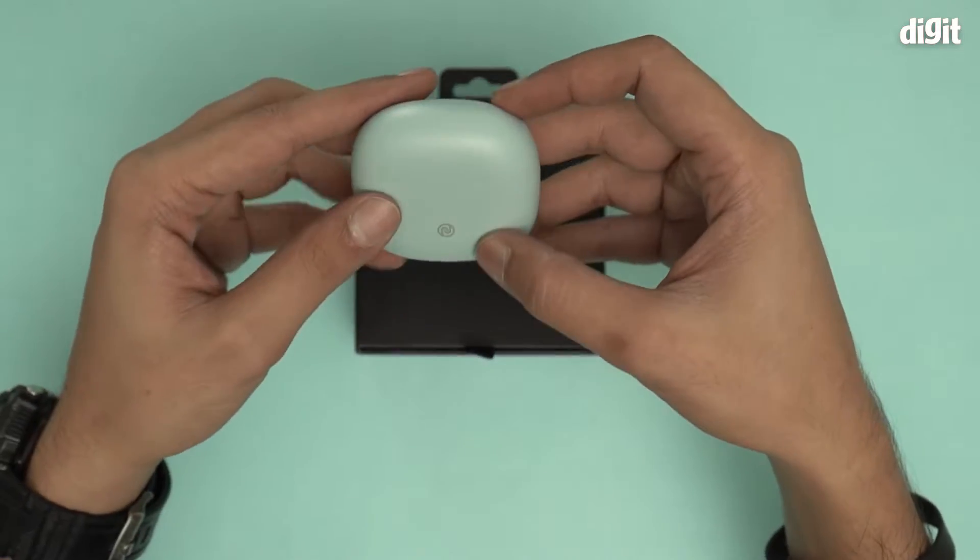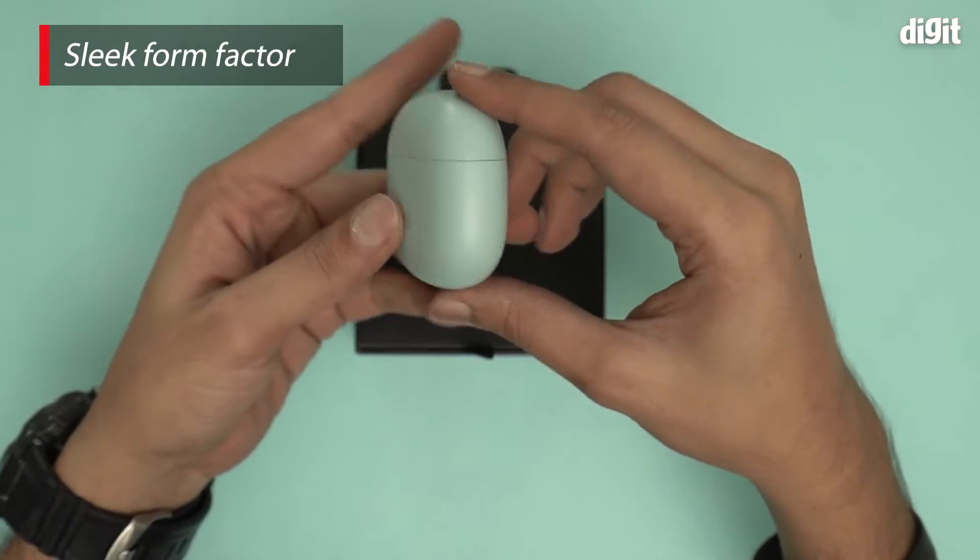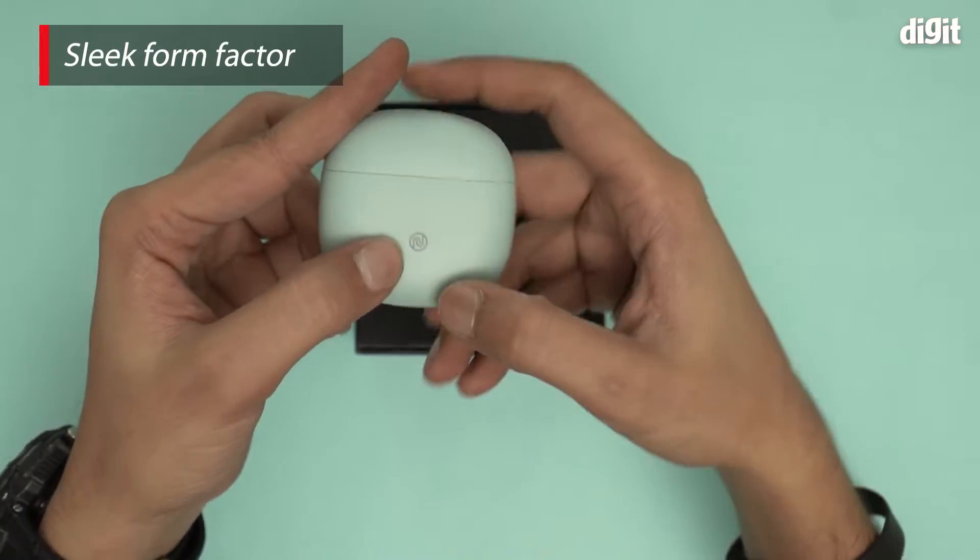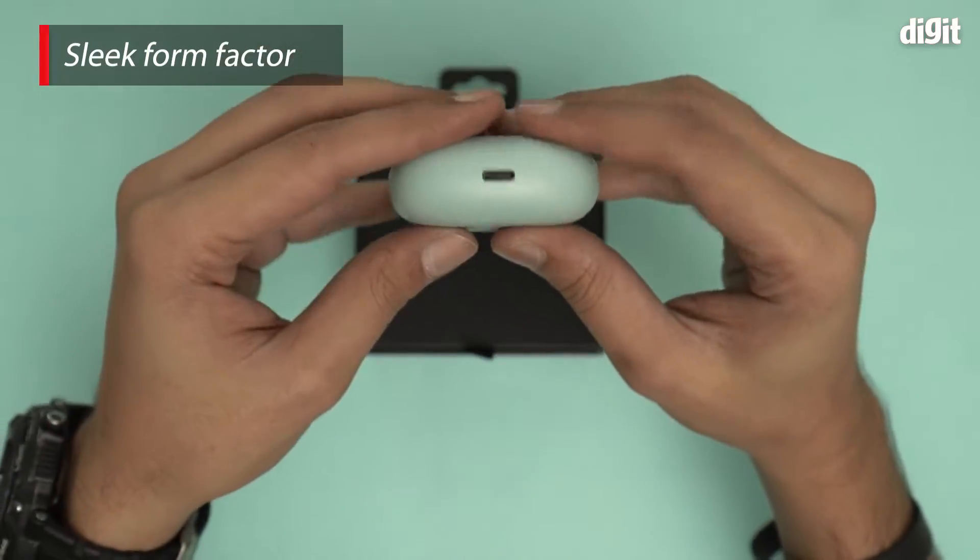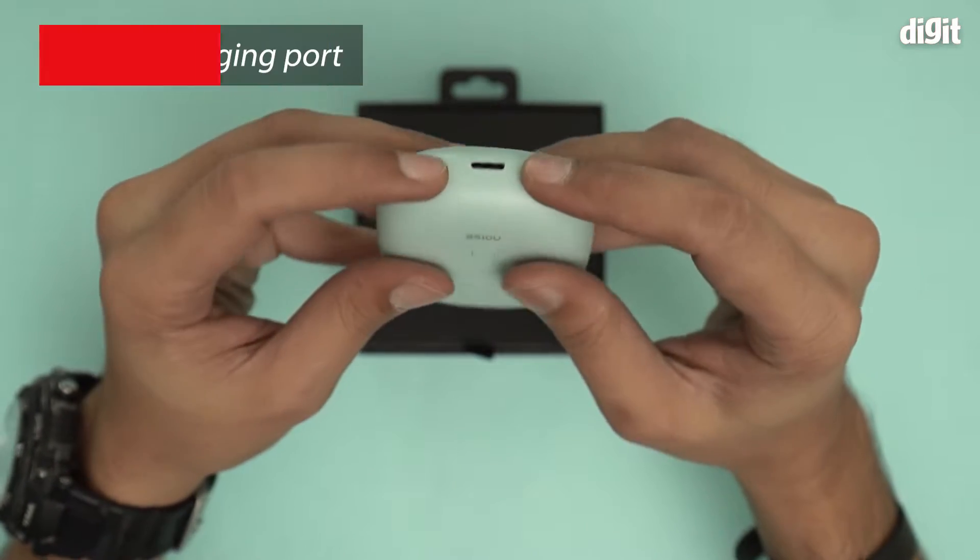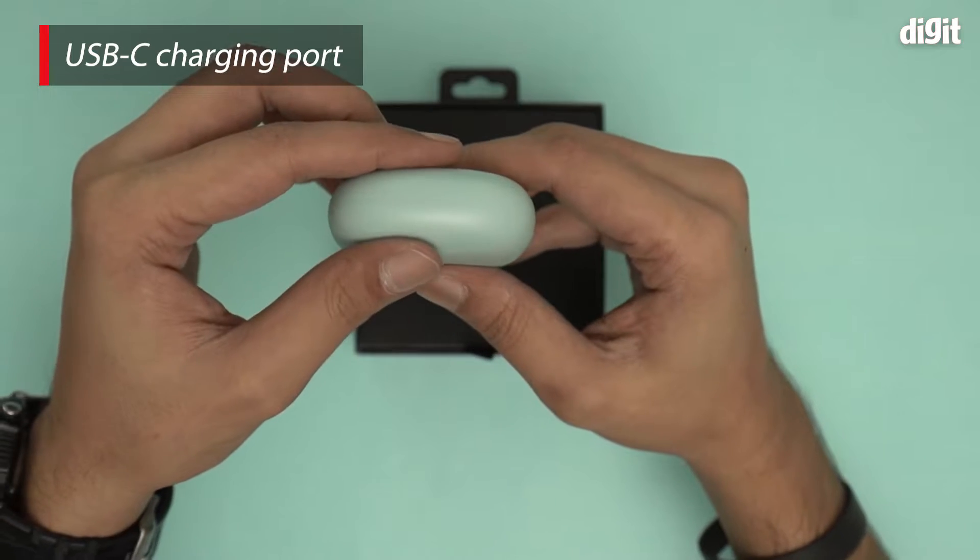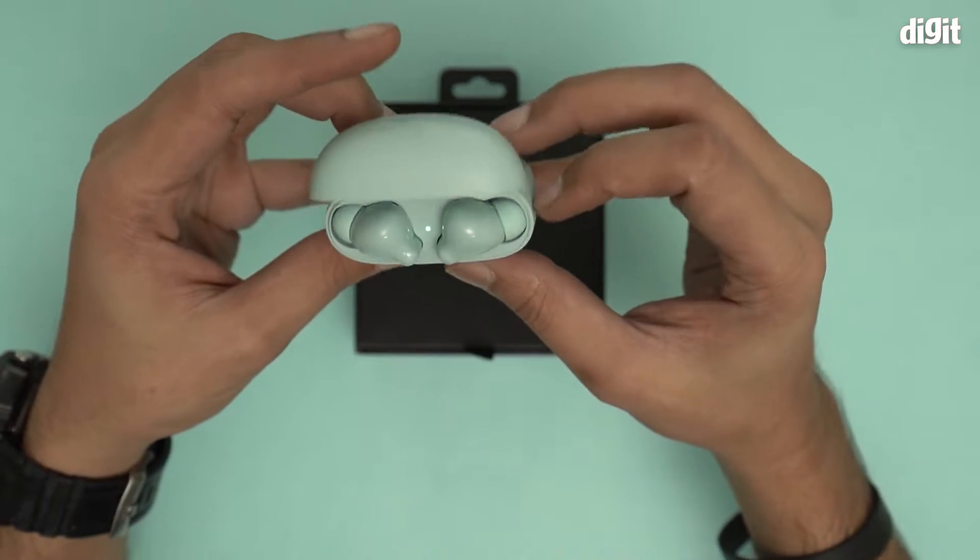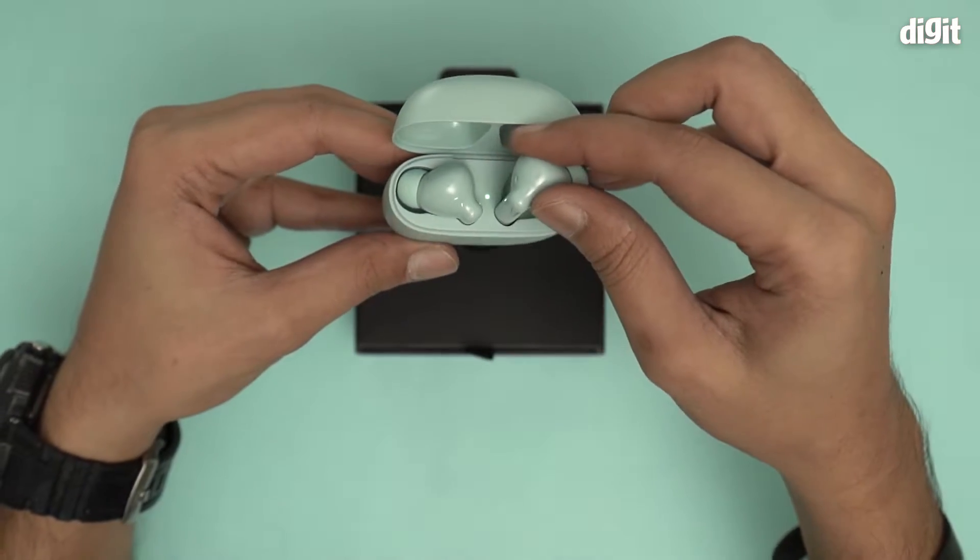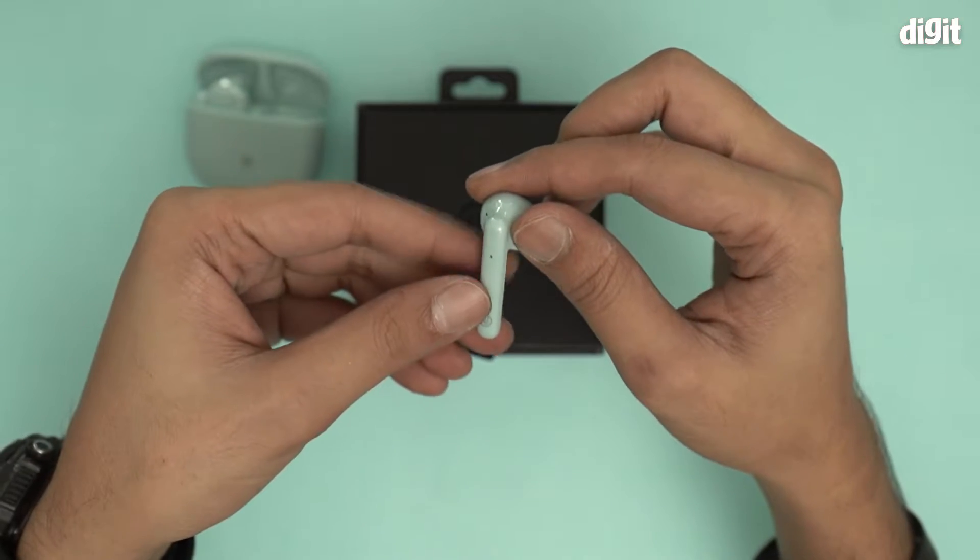The Noise logo is right here. This is the USB-C type charging port, and this I'm assuming is the reset button. And these are the earphones. Let's take a quick look at one of them.